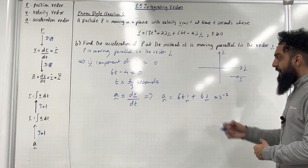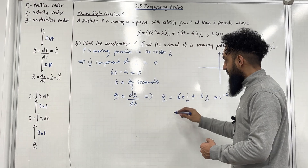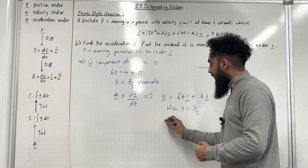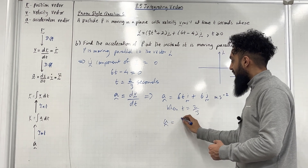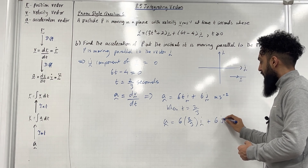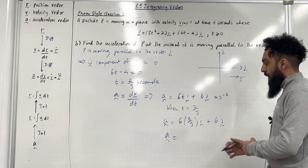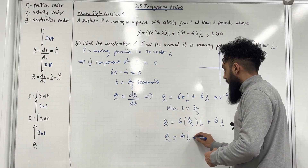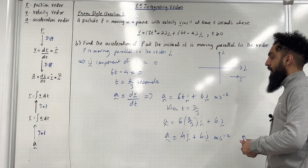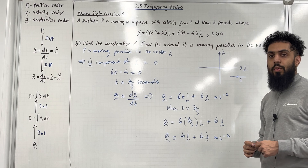We want the acceleration vector when T equals 2 over 3. Substituting in, the acceleration vector equals 6 multiplied by 2 over 3 times I plus 6J meters per second squared, giving 4I plus 6J meters per second squared. That completes part B of exam style question 1.